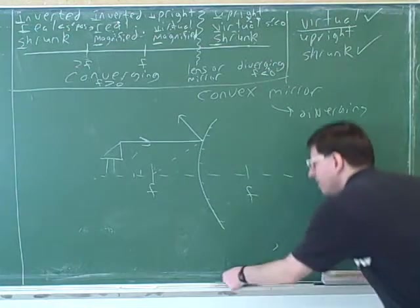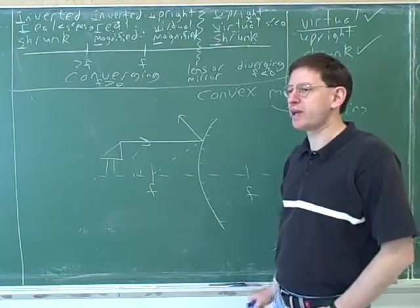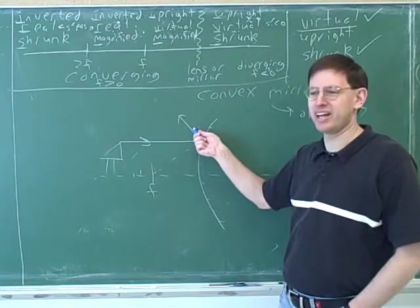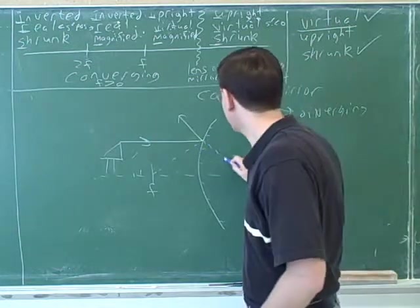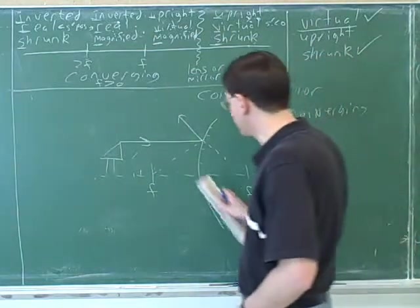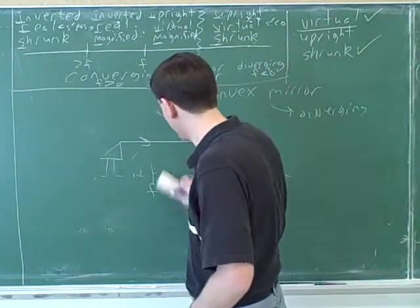But a traceback, what does a traceback mean? A traceback means tracing the same line. This is not the traceback because it's not on the same line as this outgoing light ray. The traceback has to be on the same line as the outgoing light ray. So this was a mistake to draw the traceback in this direction.